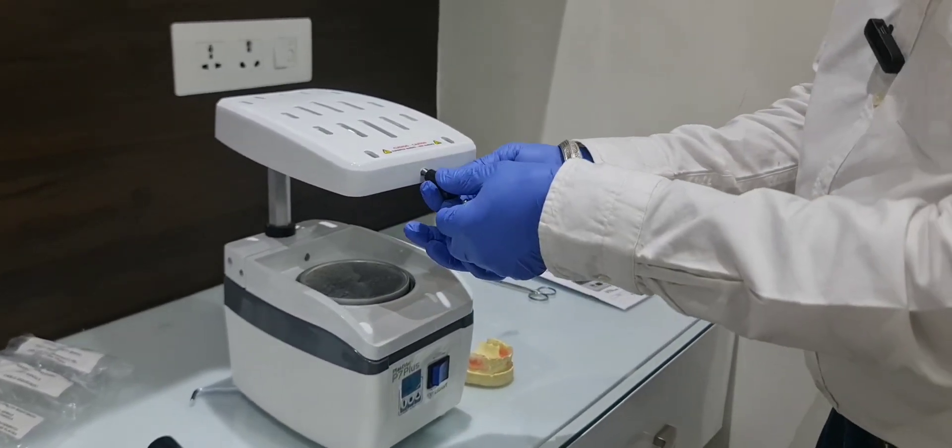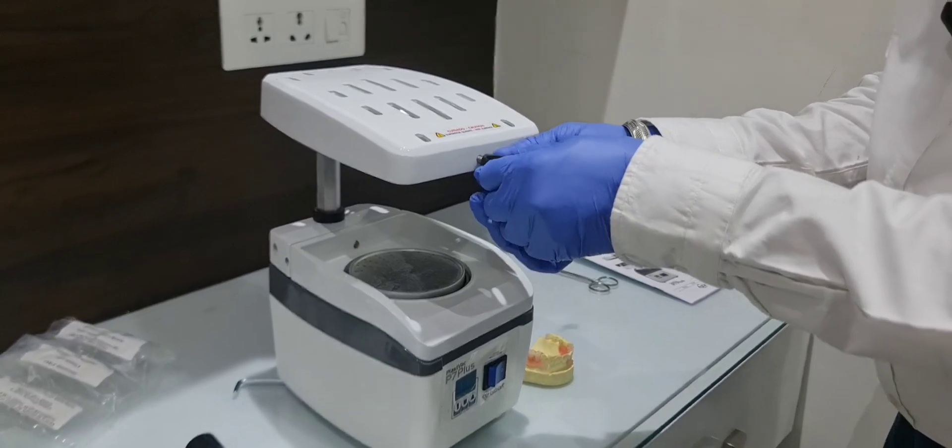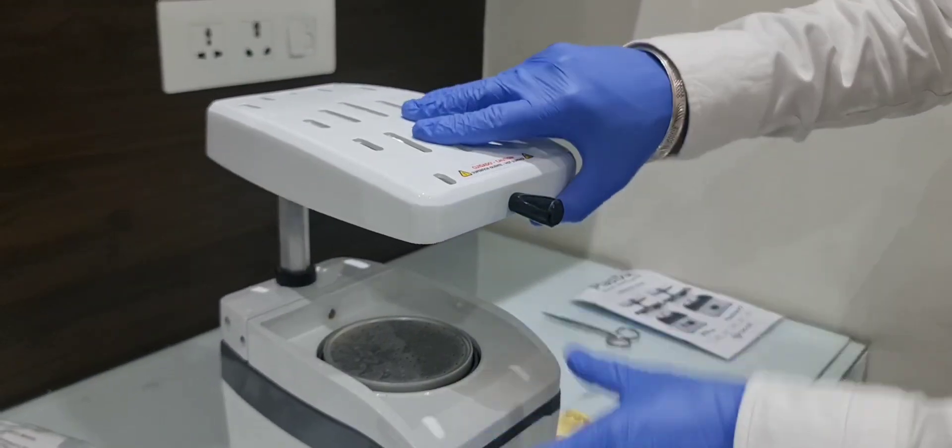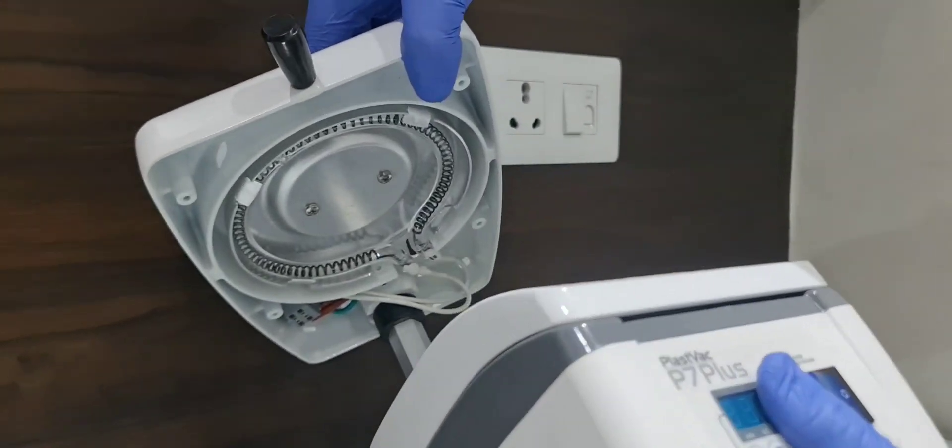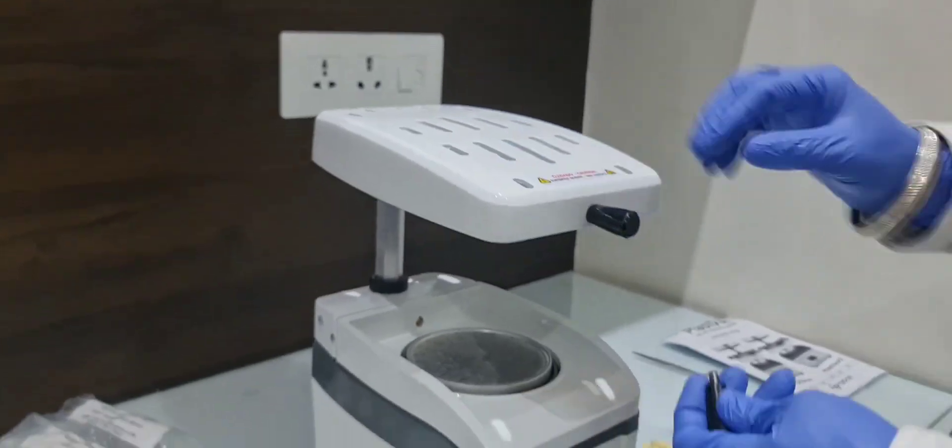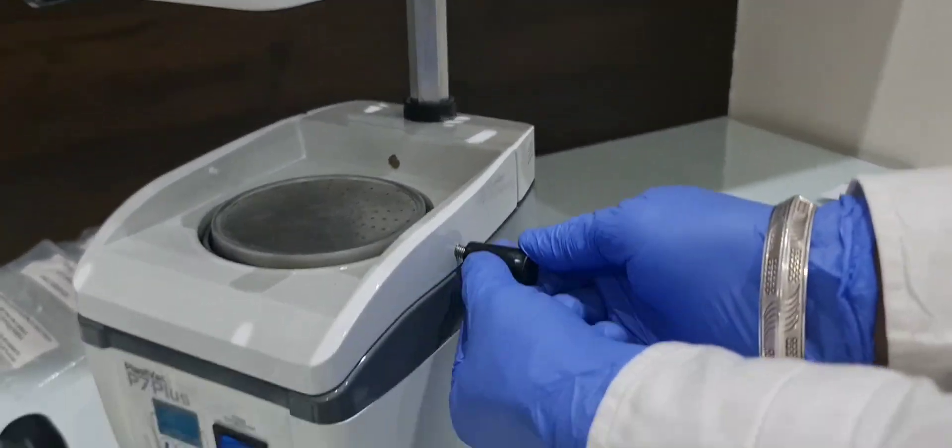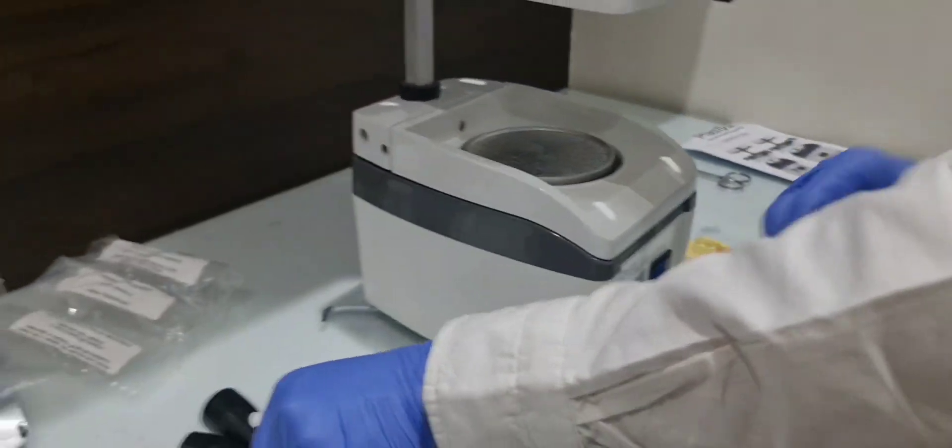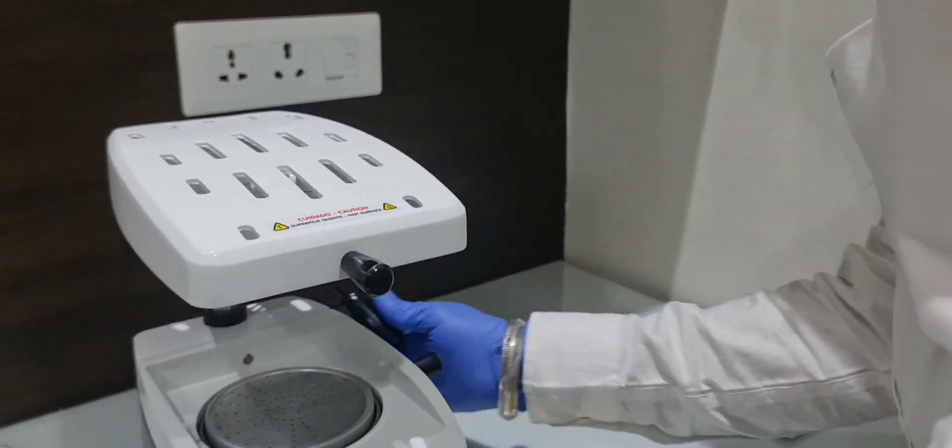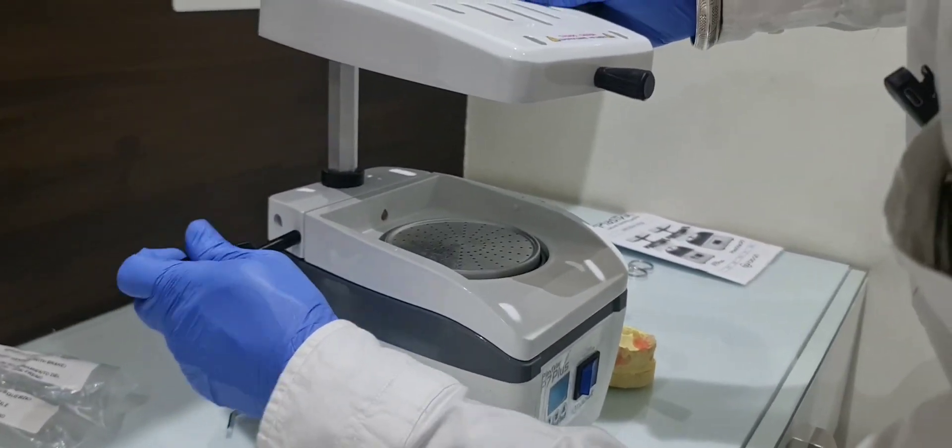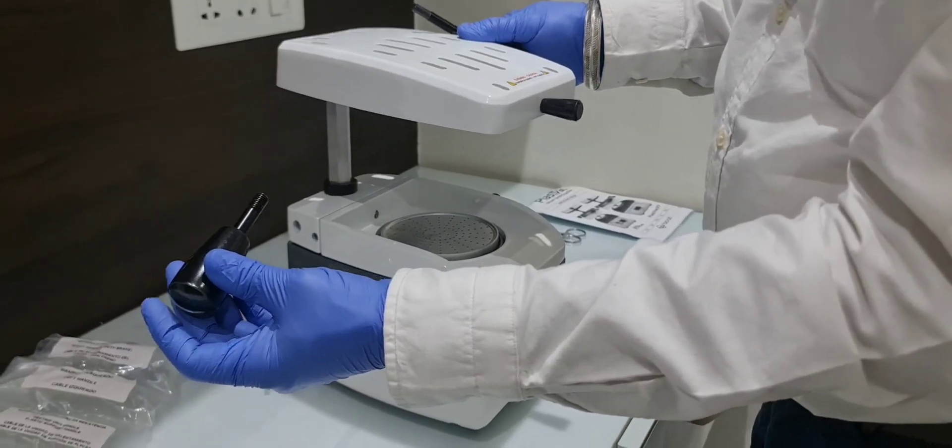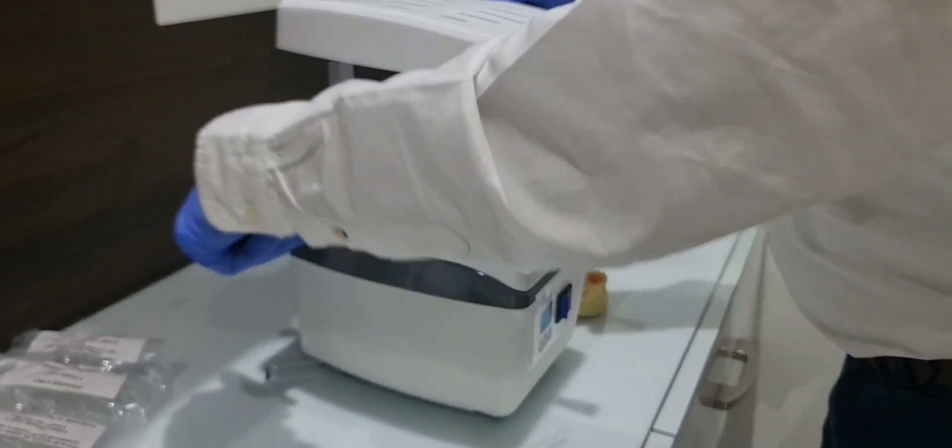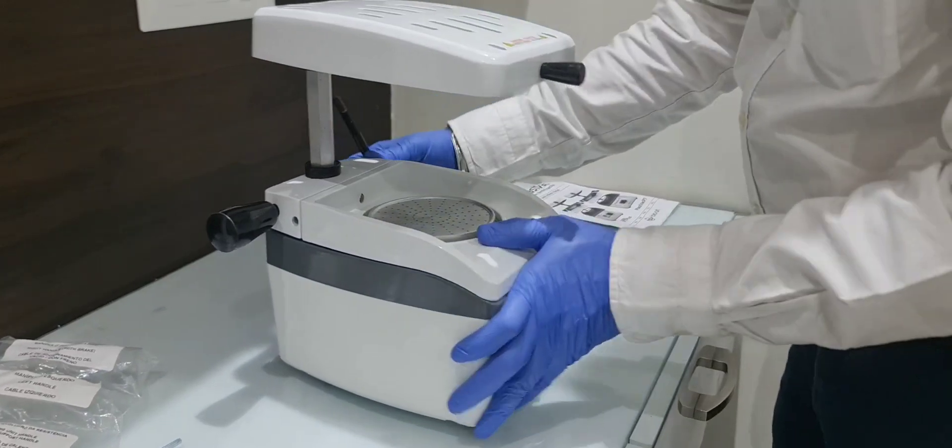These two small handles, one for the movement of the heater, which is inside here you can see. The two bigger ones, the longer one is for the right tray, and this one is for the left.